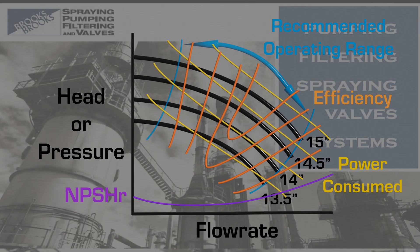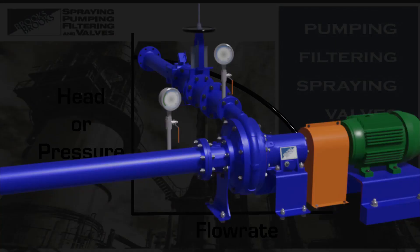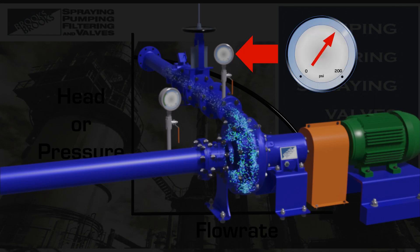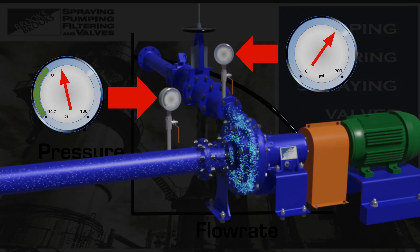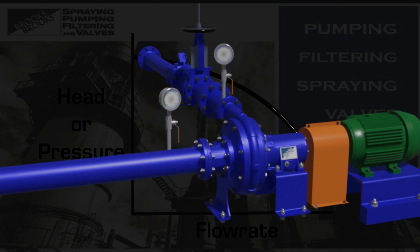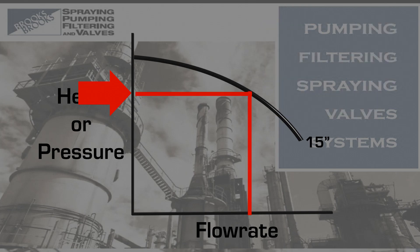Let's now look at a single curve and see how it can be used in a real pumping application. First, ensure the pump curve corresponds to the actual pump speed and impeller diameter. Once confirmed, we can take the discharge gauge reading and subtract the suction gauge reading to get the total dynamic head being generated by the operating pump. We can then plot this value on the pressure or head axis, which gives us an estimated flow rate.